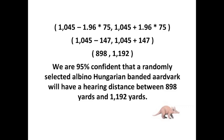Look at how you thought your way through that problem. The first thing you had to do was identify whether it was a population problem or a sample problem. You determined it was a population problem because it gave you values for mu and sigma. Once you determined it was a population problem, you had to determine whether it was a data or an x-bar distribution. Since they asked for all hearing distances, you determined it was a data distribution. Then you selected the proper formula, read your problem again to get the values, plugged them in, simplified, and away you went.